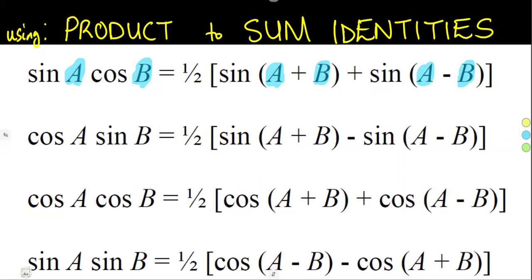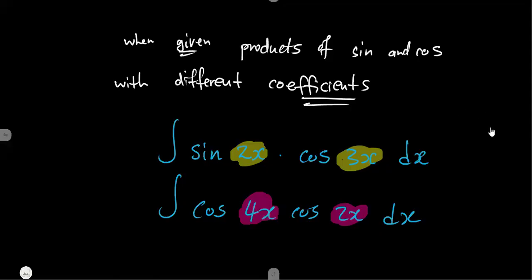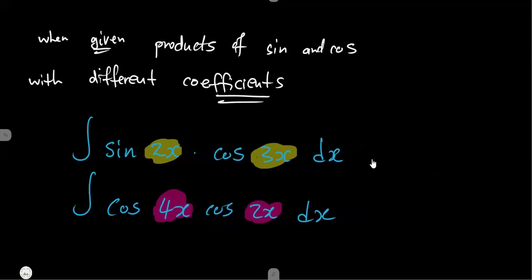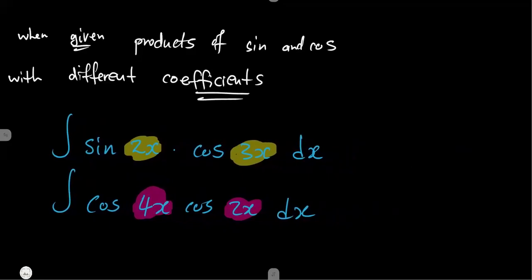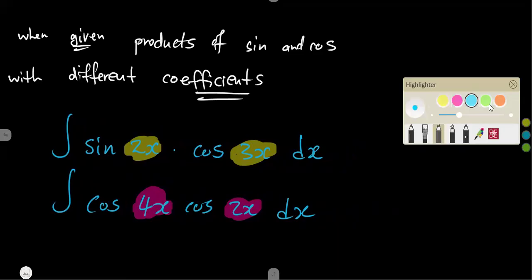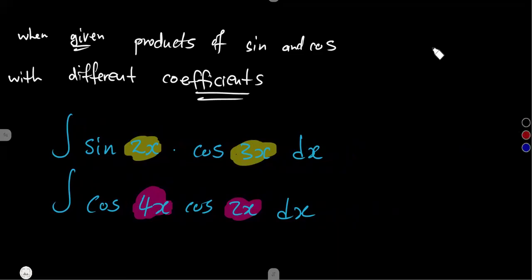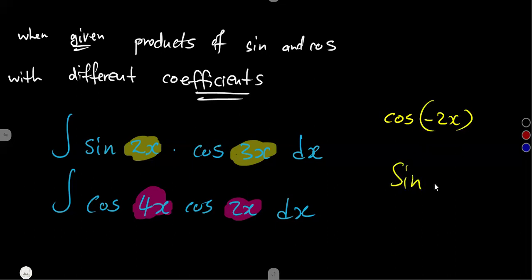If you want to interchange the order, you can interchange the way that you want, or you can maintain it as is — A as it is, B as it is. However, if you maintain your A and B as they are, sometimes you might end up with negative angles, such as cosine of minus 2x or sine of minus x, when you simplify A minus B.